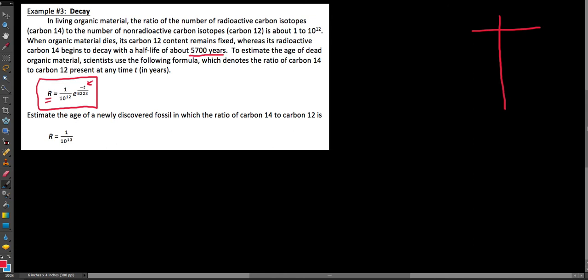To estimate the age of dead organic material, scientists use the following formula, which denotes the ratio of carbon-14 to carbon-12 present at any time t in years. And so we have this model here, and what we're asked to do is estimate the age of a newly discovered fossil in which the ratio of carbon-14 to carbon-12 is this ratio. So anybody reading through this for the first time is probably going, what did this all just say? But what I really like to kind of just push you towards is identifying what are the things that are being related here.